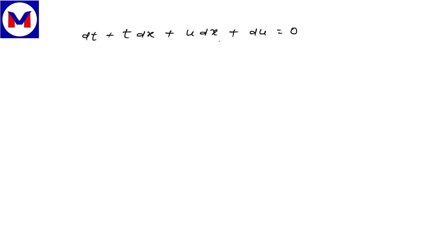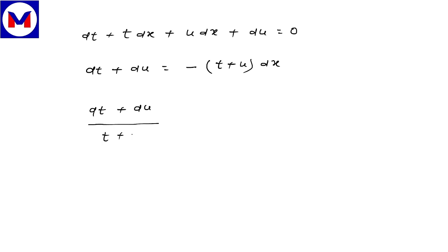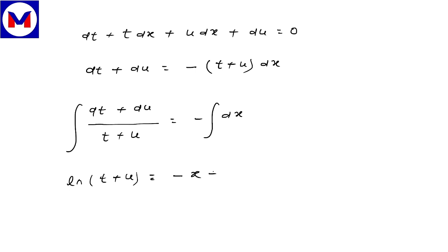Grouping the dx terms: dt + du = -(t + u)·dx, which gives dt + du upon (t + u) = -dx. This is variable separable. Integrating both sides gives ln(t + u) = -x + c, where t = x²y and u = y³/3.